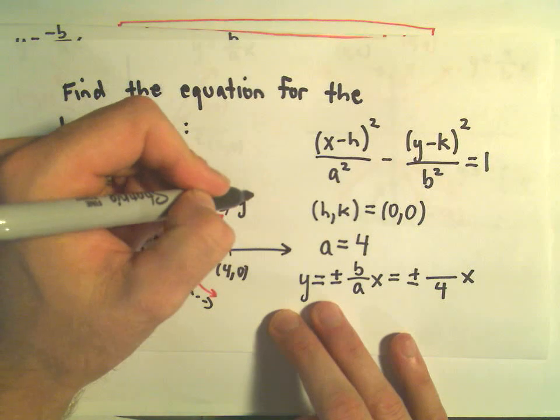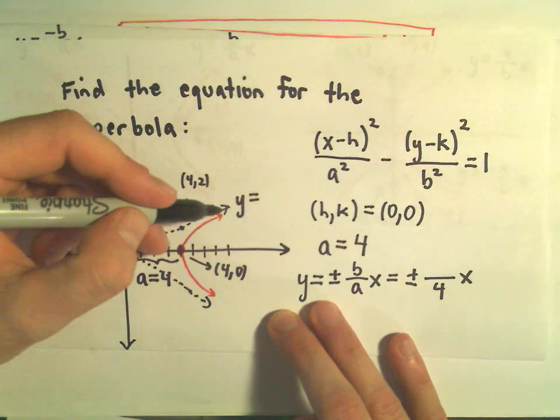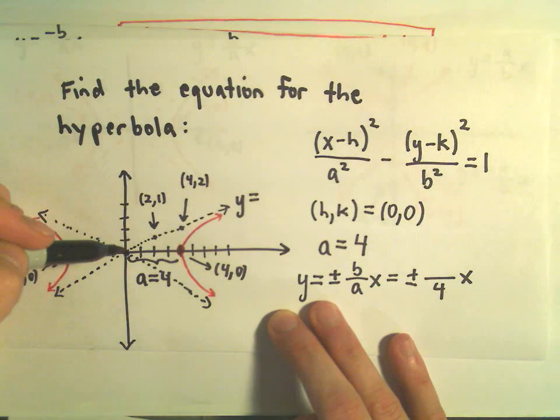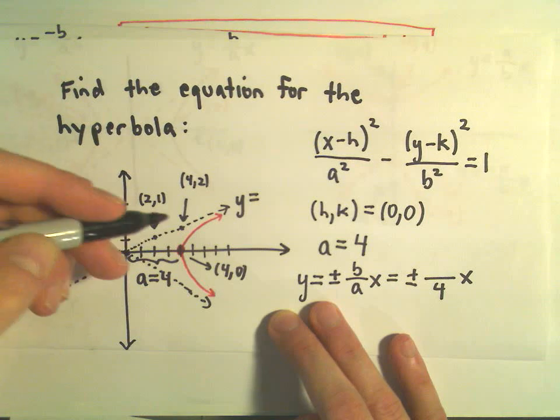So to me it looks like the slope of this line, at least this asymptote with a positive slope, to me it looks like this line has a slope of positive 1 over 2.